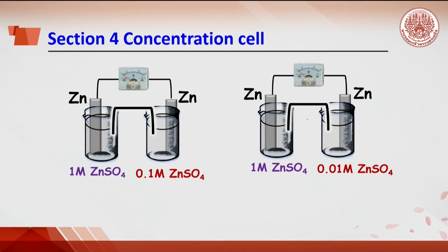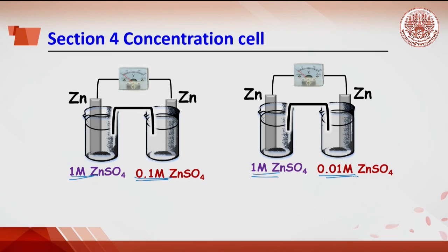Section 4 — Concentration cell. A concentration cell is a cell having the same electrode and solution, but the solution exhibits a difference in concentration. Hence, the electromotive force derives from the difference in concentration. In this experiment, the EMF cells are from zinc at 1 molar and 0.1 molar, and zinc at 1 molar with 0.01 molar. Students can guess which cell gains more EMF and why.